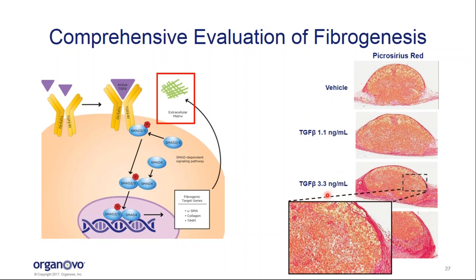We really decided to focus on a subsaturating dose of three nanograms per mL for the next experiment — a proof of concept to see if we can prevent this phenotype from occurring by treating with a known fibromodulatory agent.